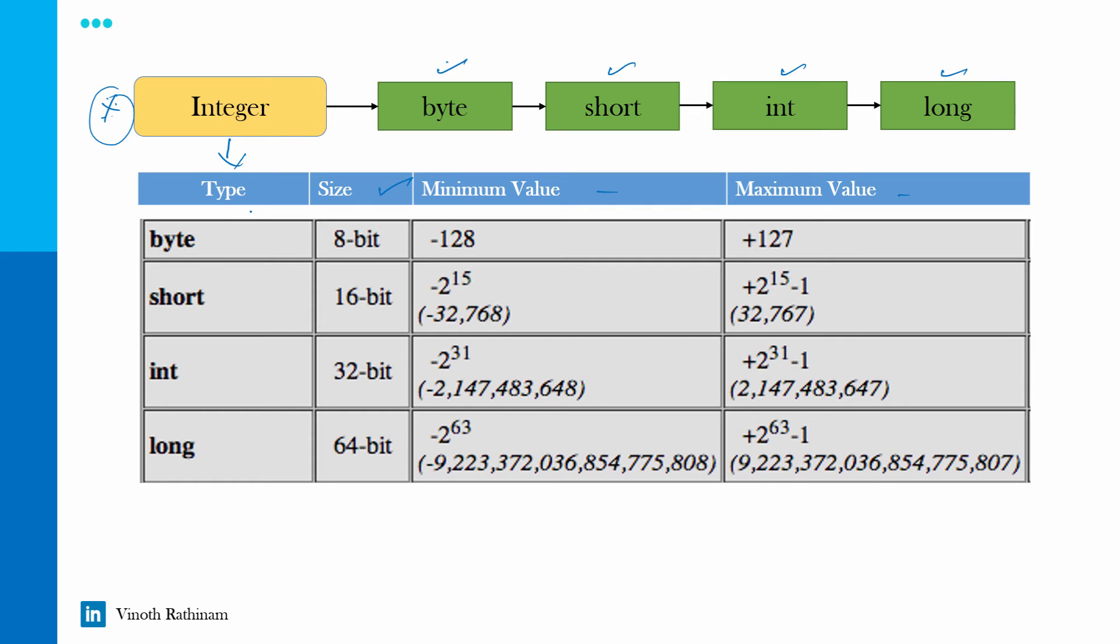Based on the numerical number range, you have to choose which data type it will suit. For example, byte. So if your input value between these two range from minus 128 to plus 127, then you can choose byte data type. For example, if you mention each month as a numerical number, then we will have 12 numbers. For 12 numbers, this much space is enough, 8-bit. So we can go for byte.